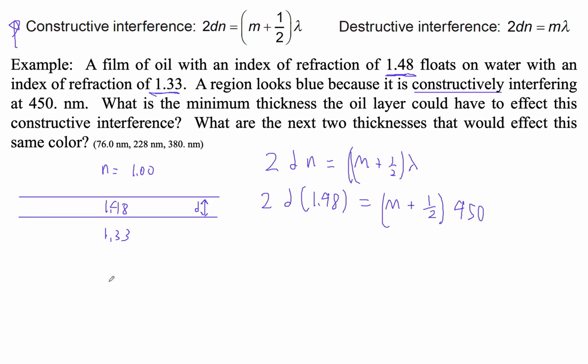Therefore, D equals M plus 0.5 times 450, which is our wavelength, divided by 2 times 1.48.